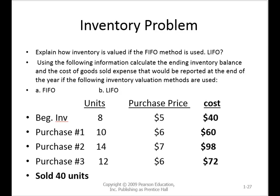LIFO is last in, first out, so the four units that are left are going to come from the beginning, not the end. There are four at $5, so four times five is $20, and the cost of goods sold is $250. In this example, it really doesn't illustrate why companies might choose one or the other — we're only talking about a $4 difference in inventory. But if inventory is very volatile and prices ranged from $3 to $12, it might make a big difference on your income statement and balance sheet. Companies will choose a method that best represents the values of the assets they have and the profitability of the company.